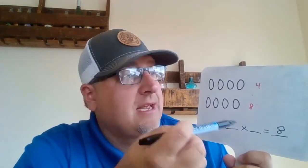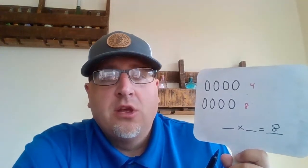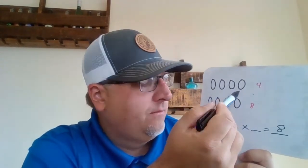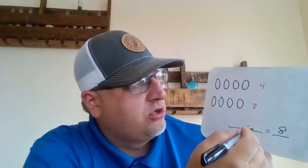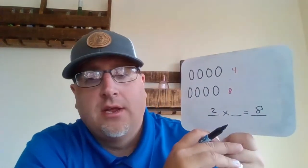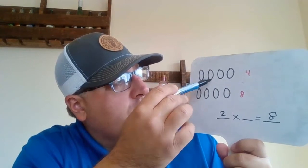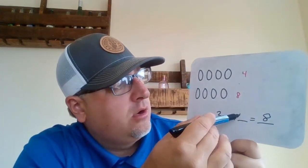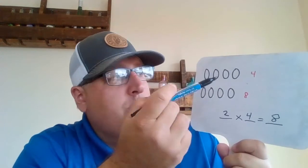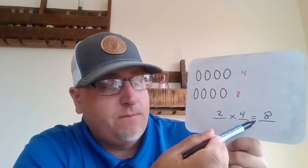We got that just from looking at the array and doing some skip counting. Or even if we weren't able to skip count, we could count up all those circles and we know we had eight. So now we've got to find factors. Let's take a look at rows — how many rows do we have? All the way across: that's one row. All the way across: that's two rows. So we have two rows. How many columns? One, two, three, four — we have four columns. Two rows, four columns: two times four equals eight.